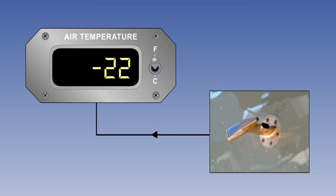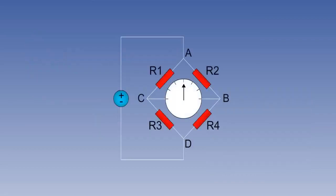It is often desirable to have temperature information in an electrical form so that it can be fed to other instruments and systems. Remote temperature gauges work on the principle that the electrical resistance of certain materials changes with a change in temperature. Measurement of electrical resistance will therefore be a measurement of temperature, and to measure it, a resistance circuit is employed, commonly known as a Wheatstone bridge.